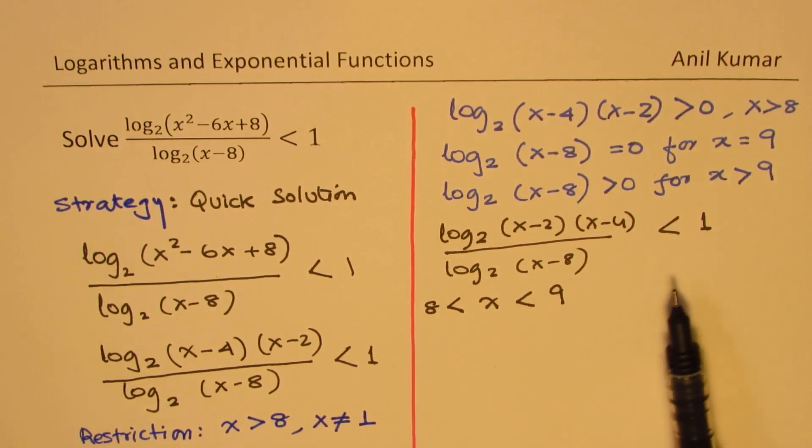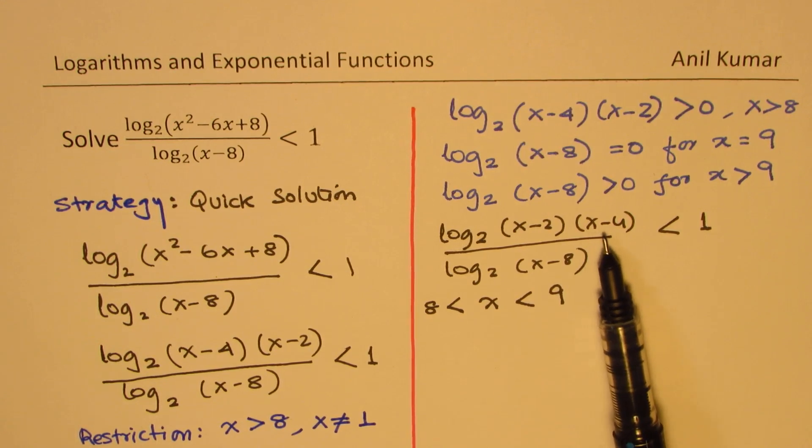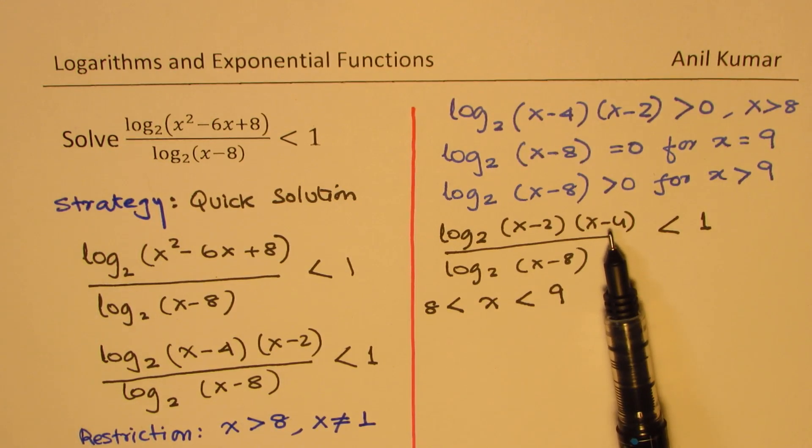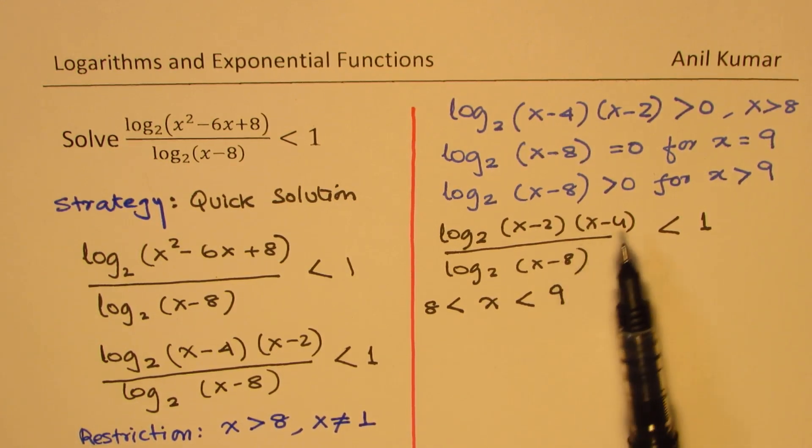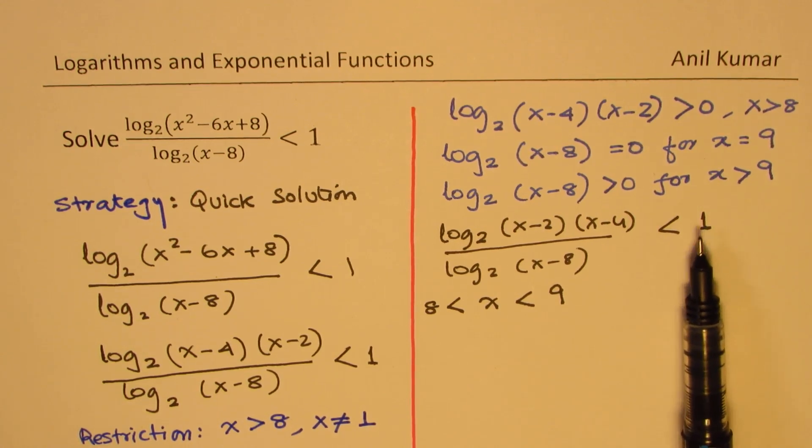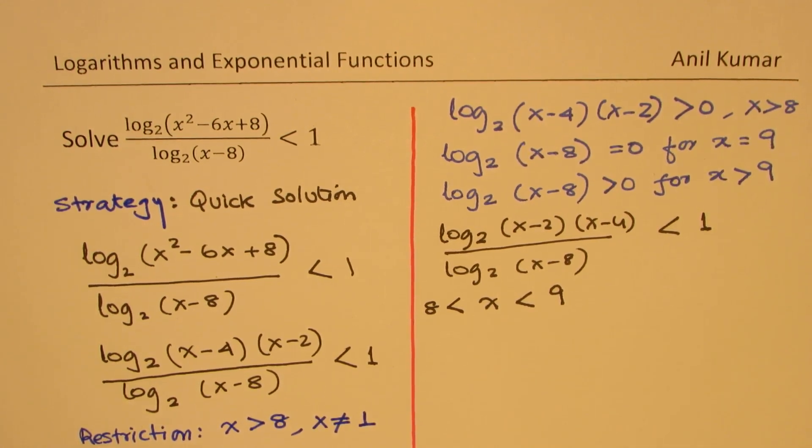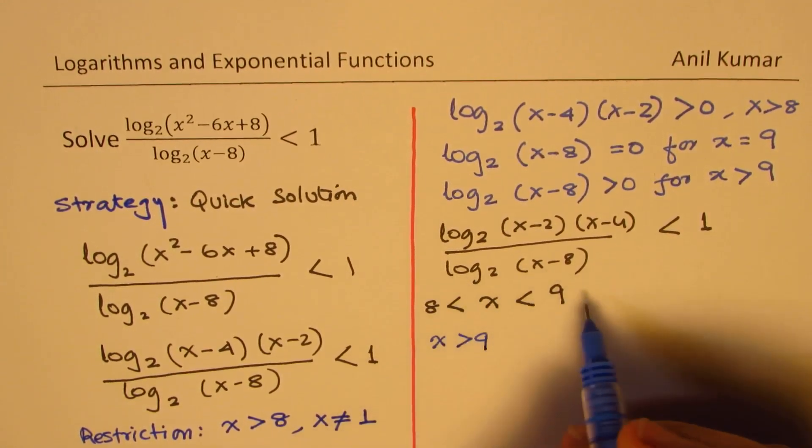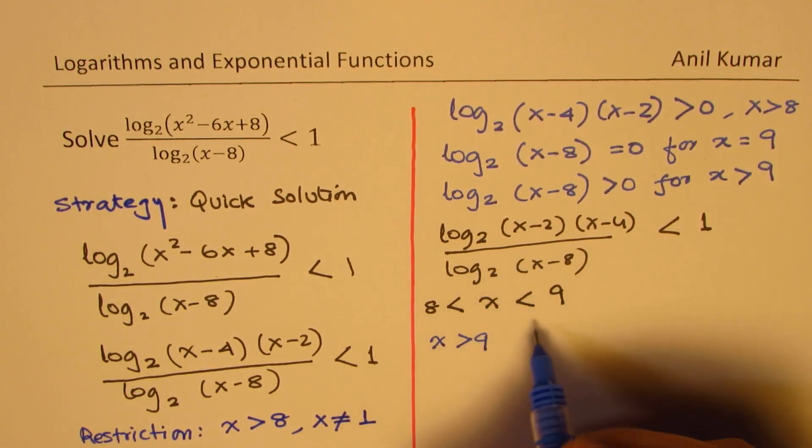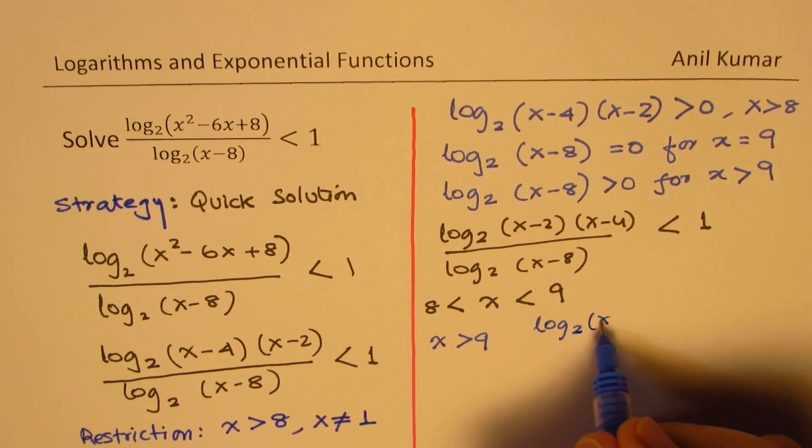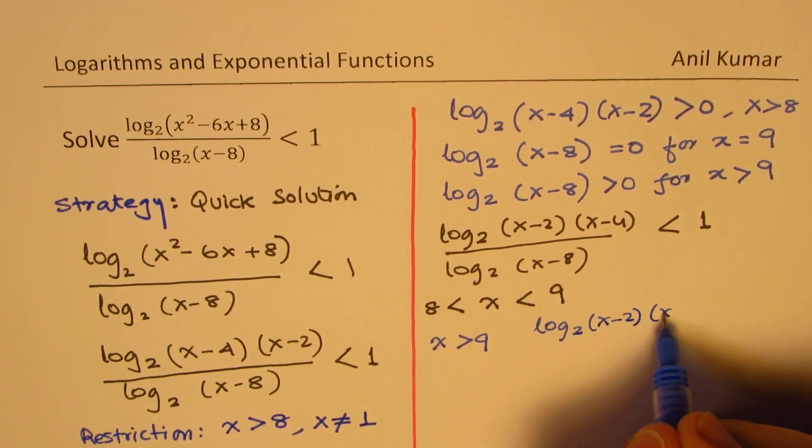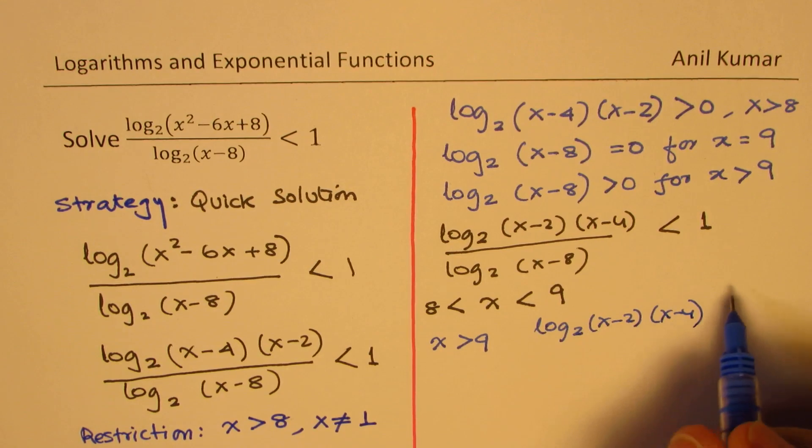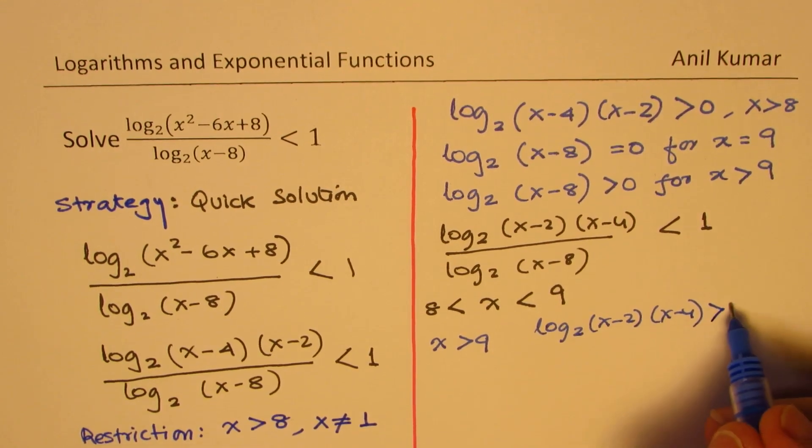The only thing you want to check is what happens after 9. Now after 9, you can see that the numerator values are much higher than the denominator. So it is greater than 1. So when x is greater than 9, definitely log base 2 of (x - 2)(x - 4) will be greater than log base 2 of (x - 8).